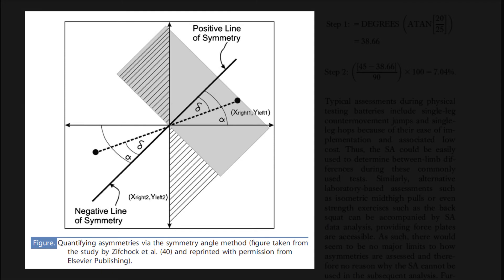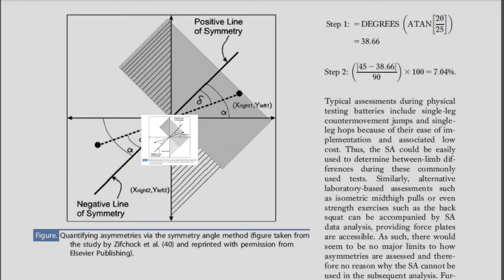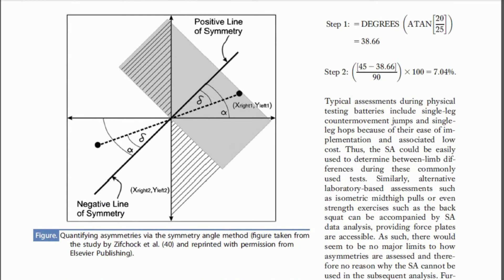The symmetry angle — there's a picture of it in the diagram, which looks a little complex, but essentially that thick diagonal black line is an indication of perfect symmetry, indicating 45 degrees. The first figure you get in step one by going through the equation is the degrees, and then to turn it into a percentage, you multiply by 100, making it comparable to all the other equations. The reason we're suggesting this equation might be the one to move forward with is because it doesn't have a reference value.